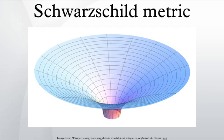A Schwarzschild black hole or static black hole is a black hole that has no charge or angular momentum. A Schwarzschild black hole is described by the Schwarzschild metric, and cannot be distinguished from any other Schwarzschild black hole except by its mass.